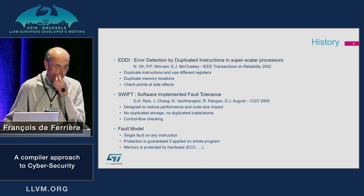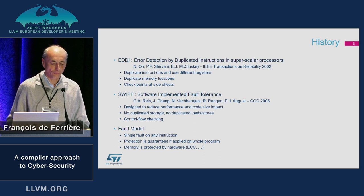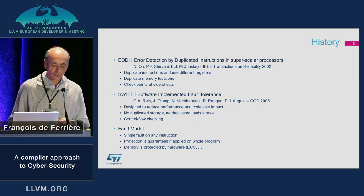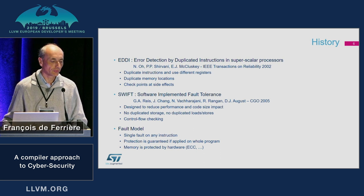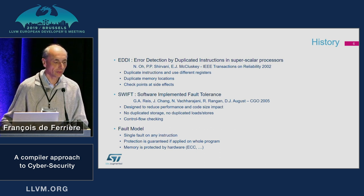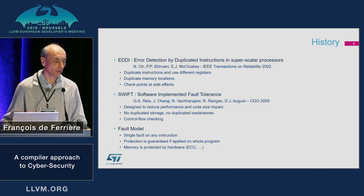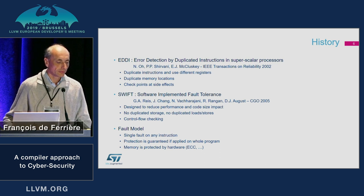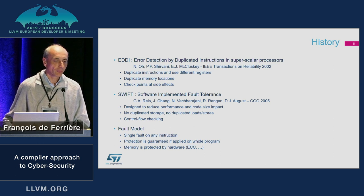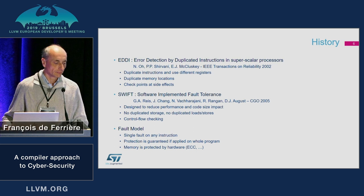We based our implementation on research papers. The first one is from 2002, and it proposed to duplicate instructions using different registers, to duplicate the memory, and to have some checks at synchronization points. In 2005, there was another paper based on the first one, with the objective to reduce the performance and code size impact of this transformation, and also to add some control flow fault checking capabilities.